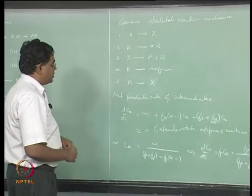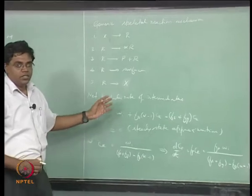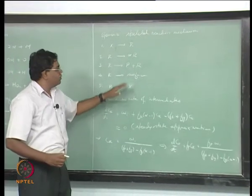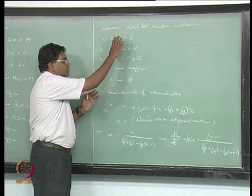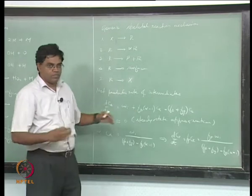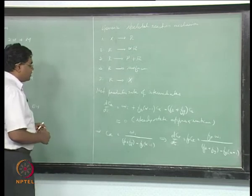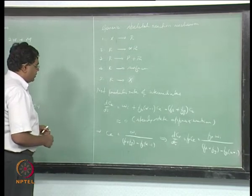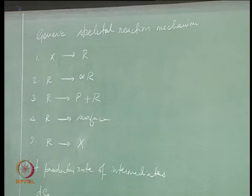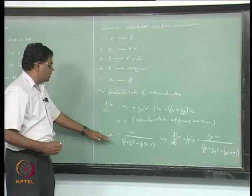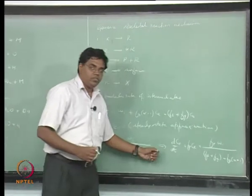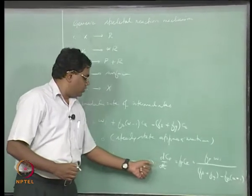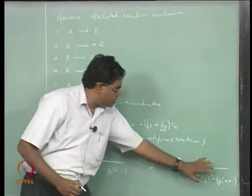We write a rate equation for the concentration of the intermediate, where the F's are essentially factors representing the reaction rate constants in this skeletal mechanism. We then apply the steady-state approximation to get an expression for the concentration of the radical intermediates, which we plug into the expression for the rate of production of the final product to get this expression.